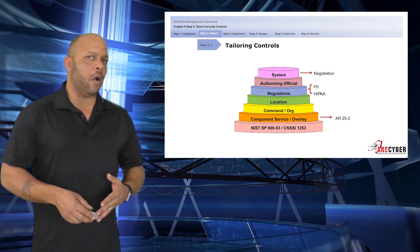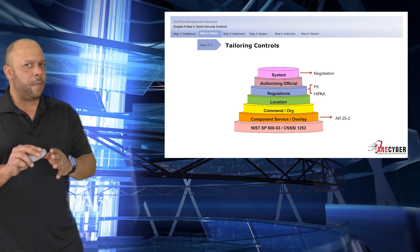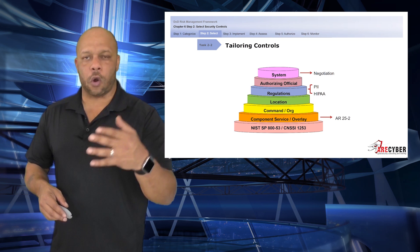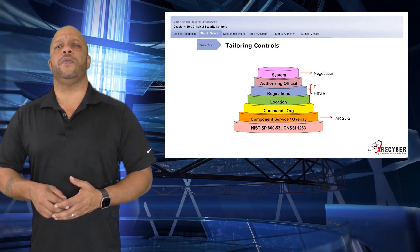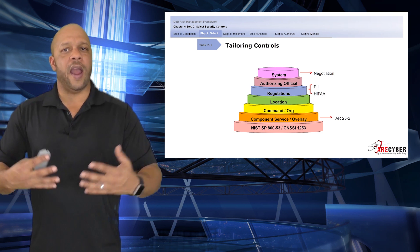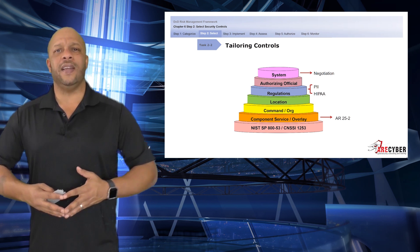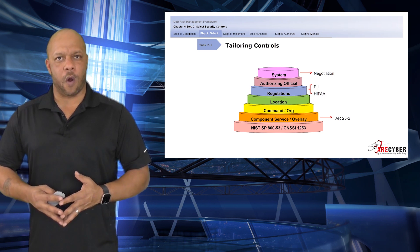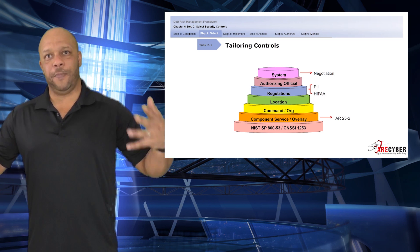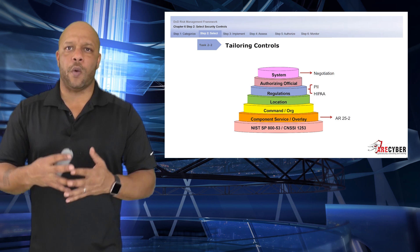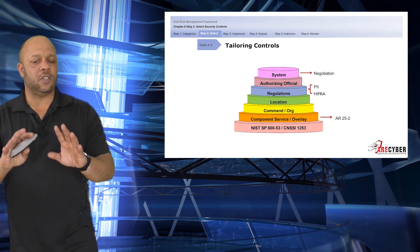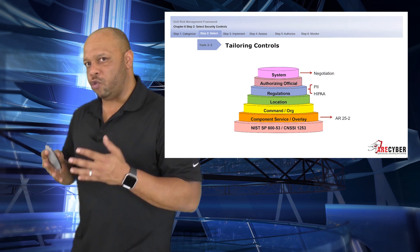So let's start tailoring our controls. These are all built on top of each other. For instance, you would start with SP 853 and CNSS 1253. Then, if you're an Army individual, you would lay the AR 25-2 requirements on top of that, then any command-specific requirements, any augmentation for location, any specific laws or regulations like PII or health data, any other requirements the authorizing official may impose, and then any specific system controls that need to be addressed.